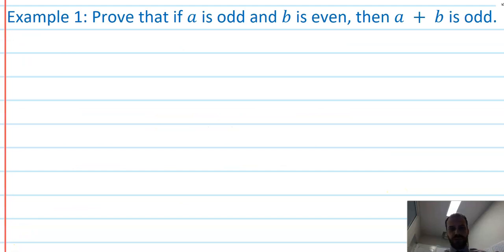All right, so here's our first example. Prove that if a is odd and b is even then a + b is odd. Now you probably all know this intuitively. Let's come up with an example. Prove that if a is odd, a can be 3, and b is even, b is 2. Then 3 + 2 is 5 which is odd, and that will work for everything.